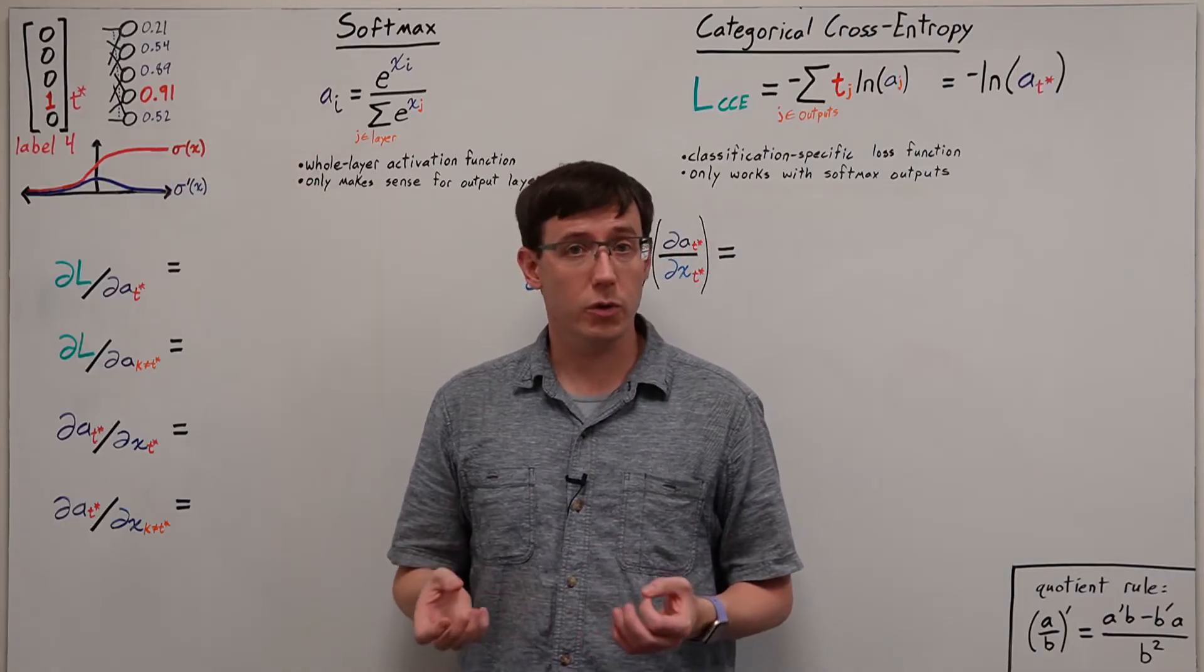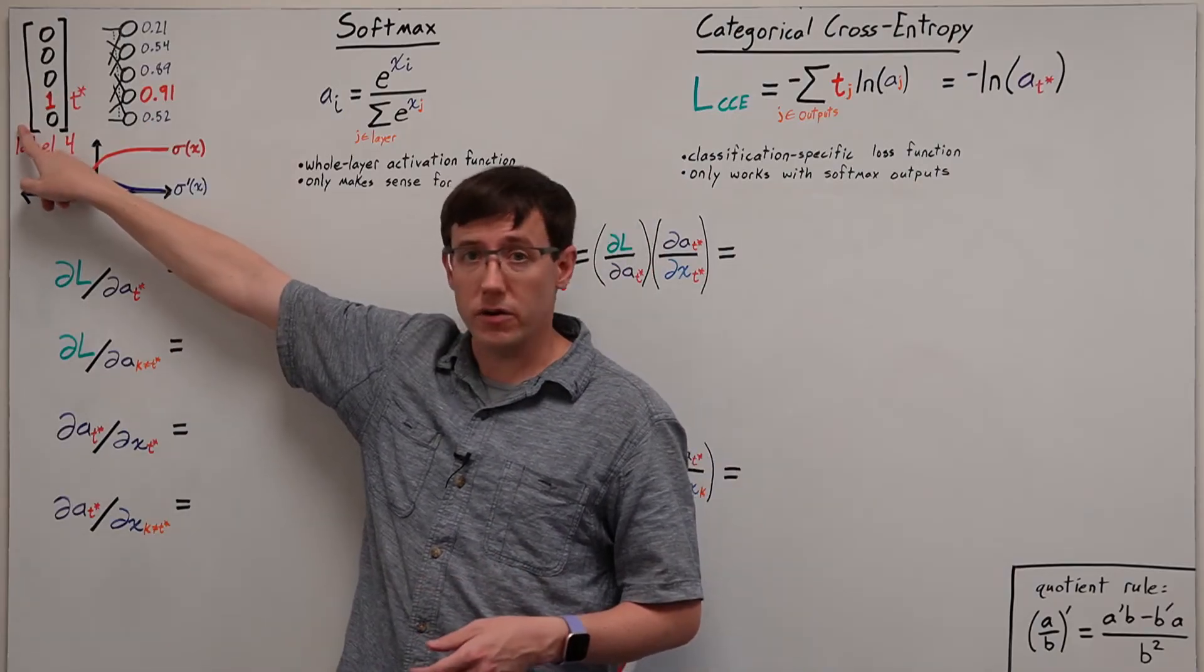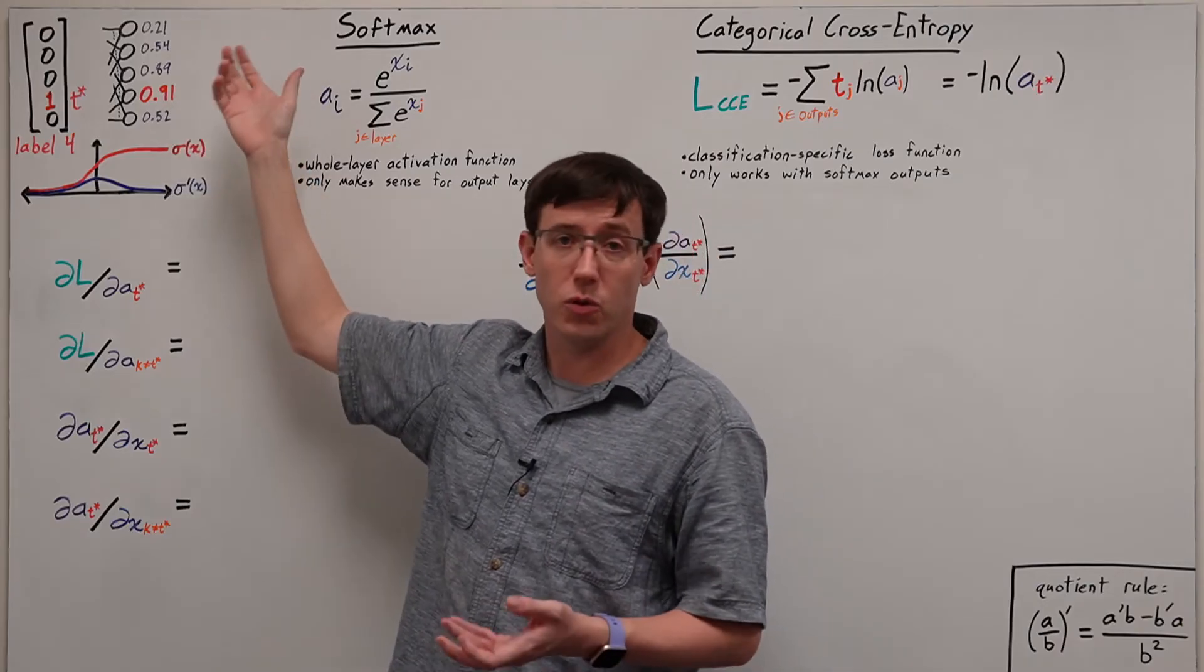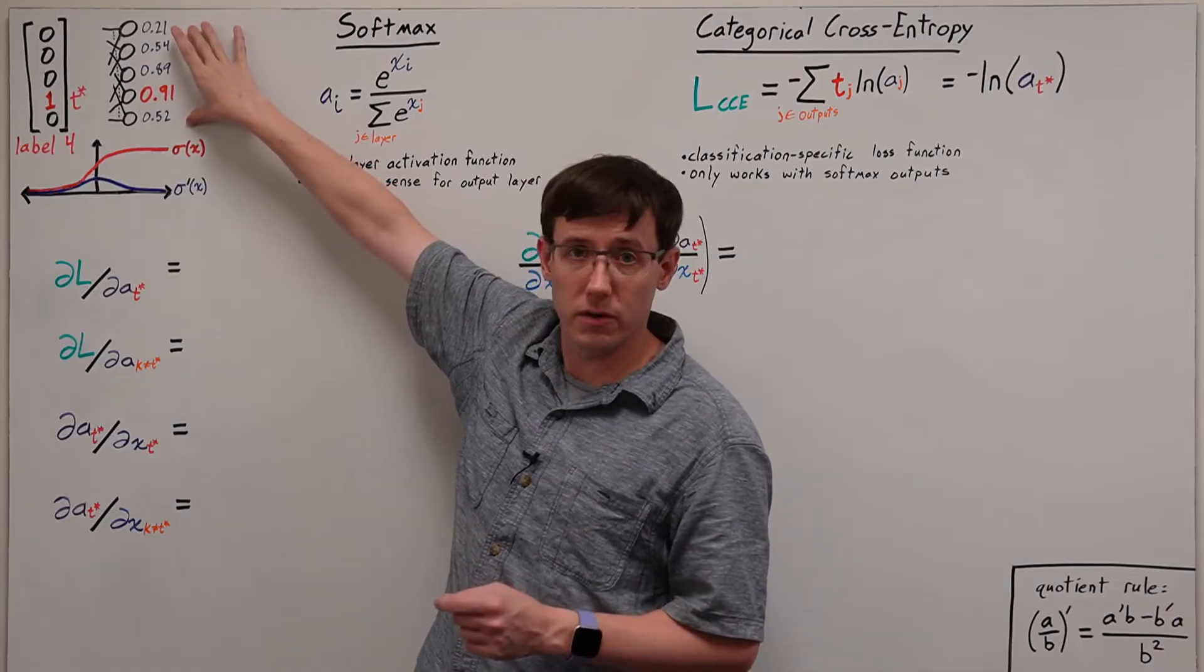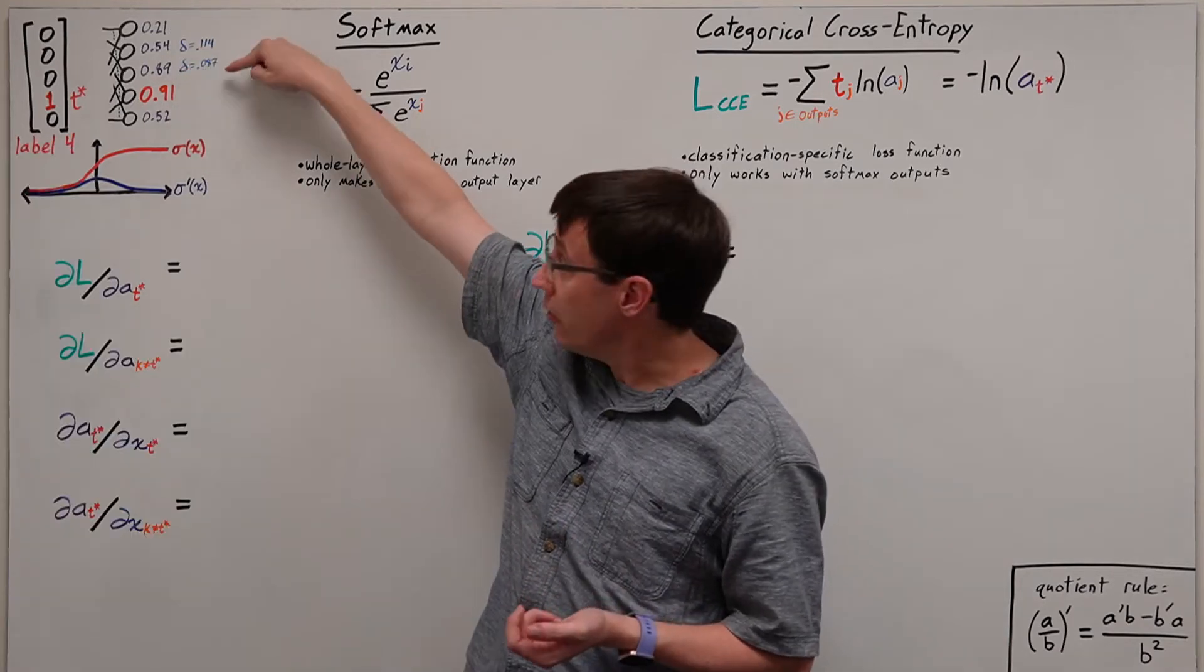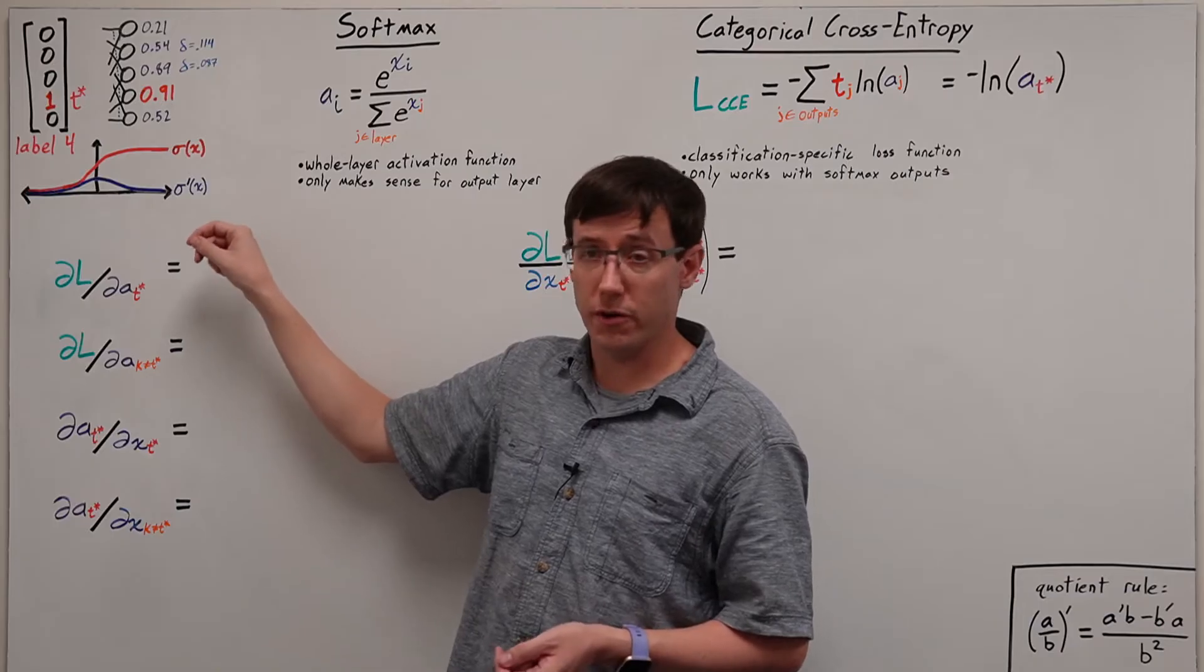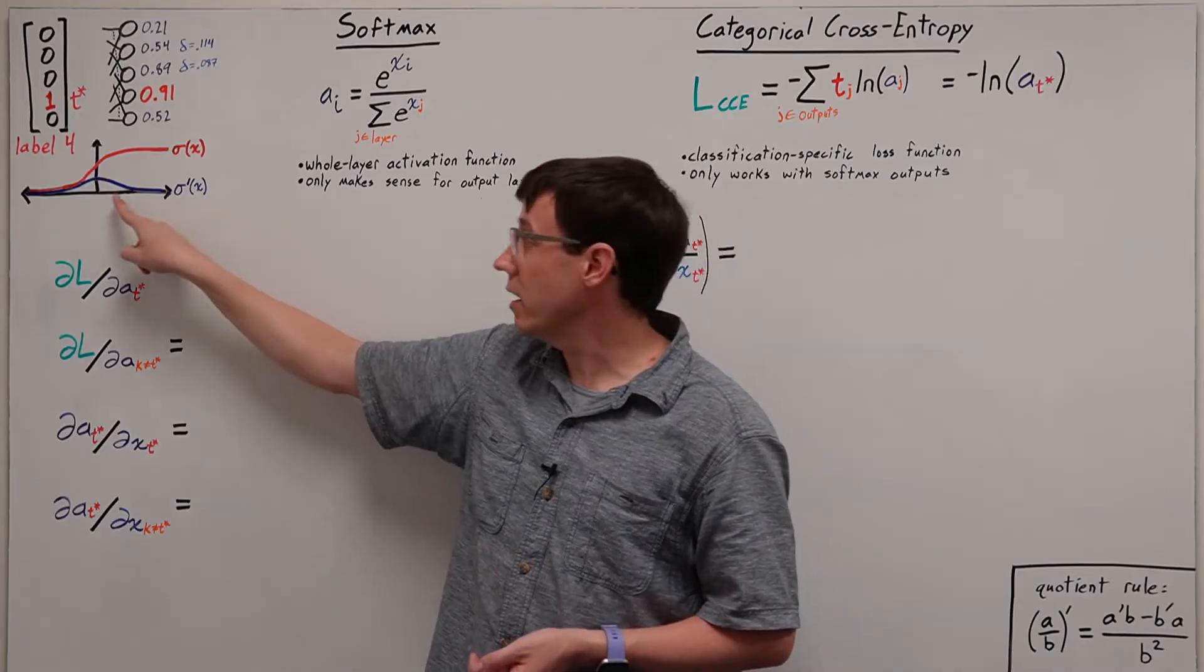The other problem here comes when we try to train this sigmoid output layer. If our target is this one-hot vector, then we are trying, when we perform gradient descent, to push this activation toward 1 and all of the others toward 0. But if we calculate the deltas for some of these neurons, we get the surprising result that the neuron that is more wrong has a smaller delta. This happens because the derivative of the sigmoid function, illustrated in blue here, gets very small when we get far away from an input of 0.